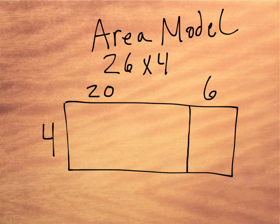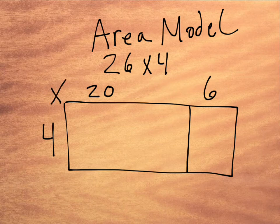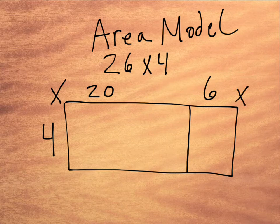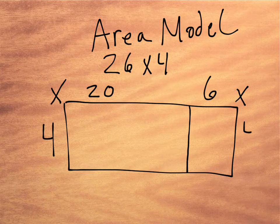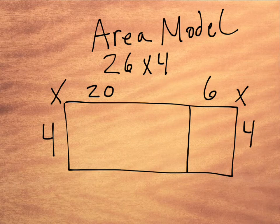So my larger portion, the space it takes up, is represented by 20 times 4. And my smaller portion has a length of 6 and a width of 4, so it is represented by 6 times 4.